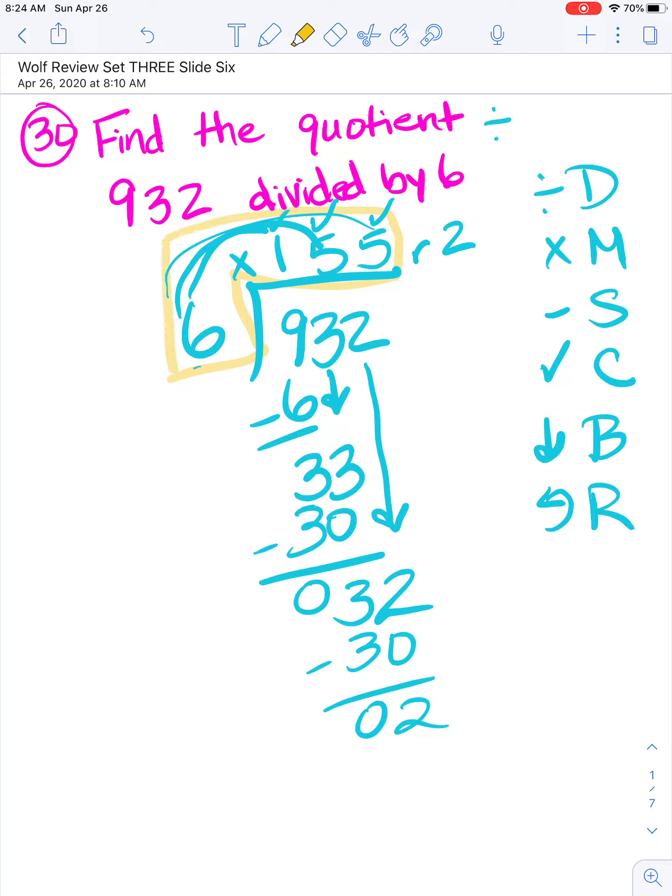Remember how we check it? We take our quotient, which is our answer, times our divisor, and add our remainder. Let's do that over here. 155 times 6: 6 times 5 is 30. I did my 1s times my 1s. Now my 1s times my 10s: 30 plus 3 is 33. Now my 1s times my 100s: 6 times 1 is 6, plus 3 is 9.